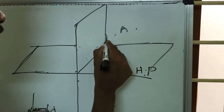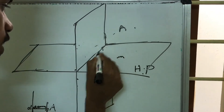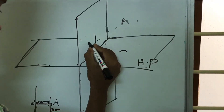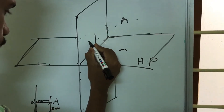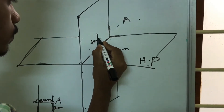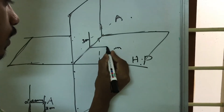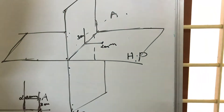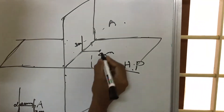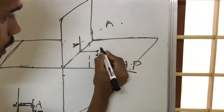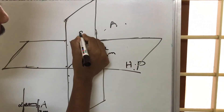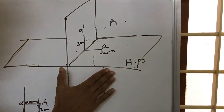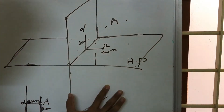We display the point at 30mm and 20mm. The names are 'a' and 'a dash'. Then we remove these planes.